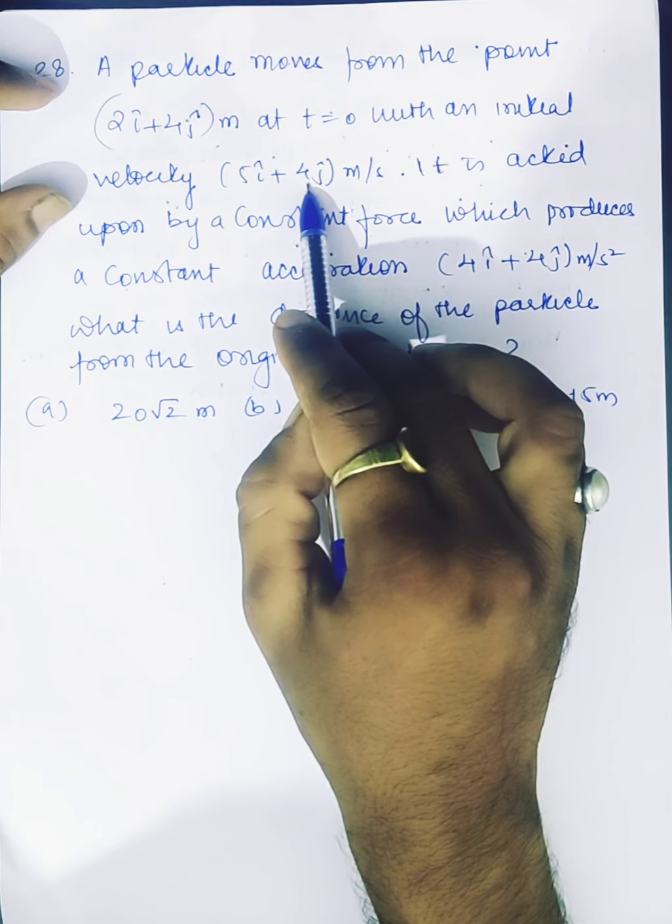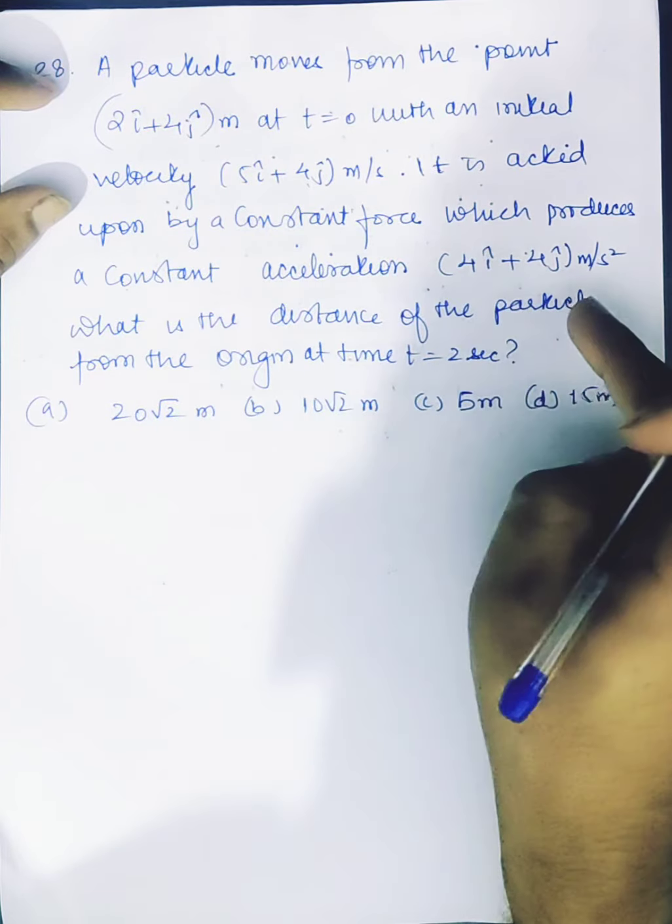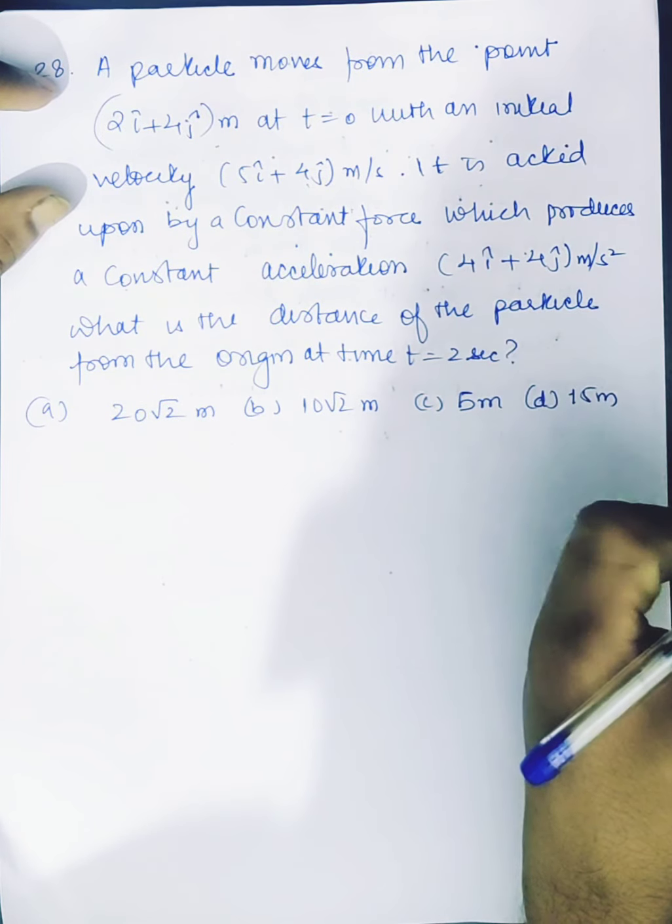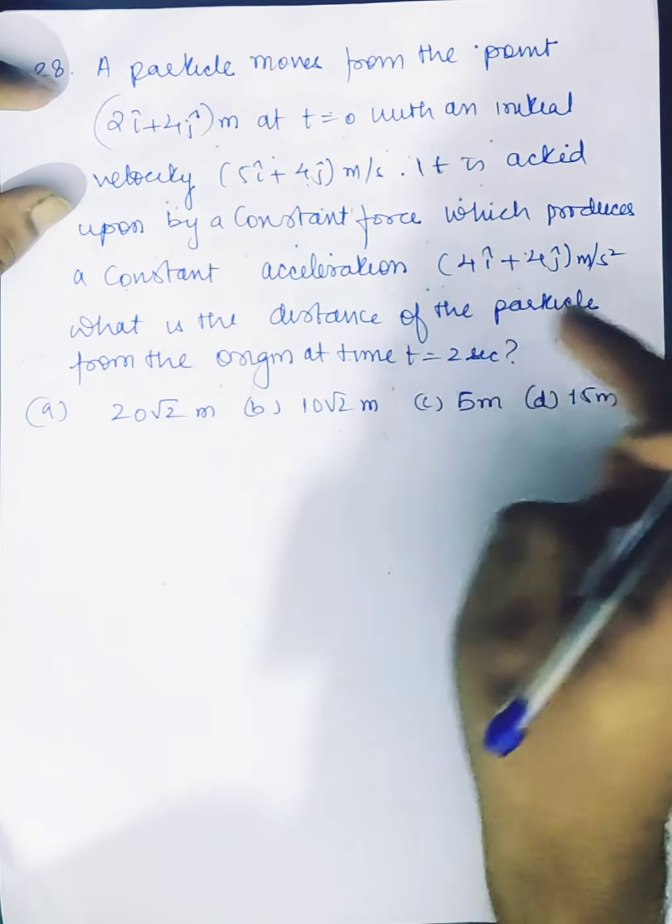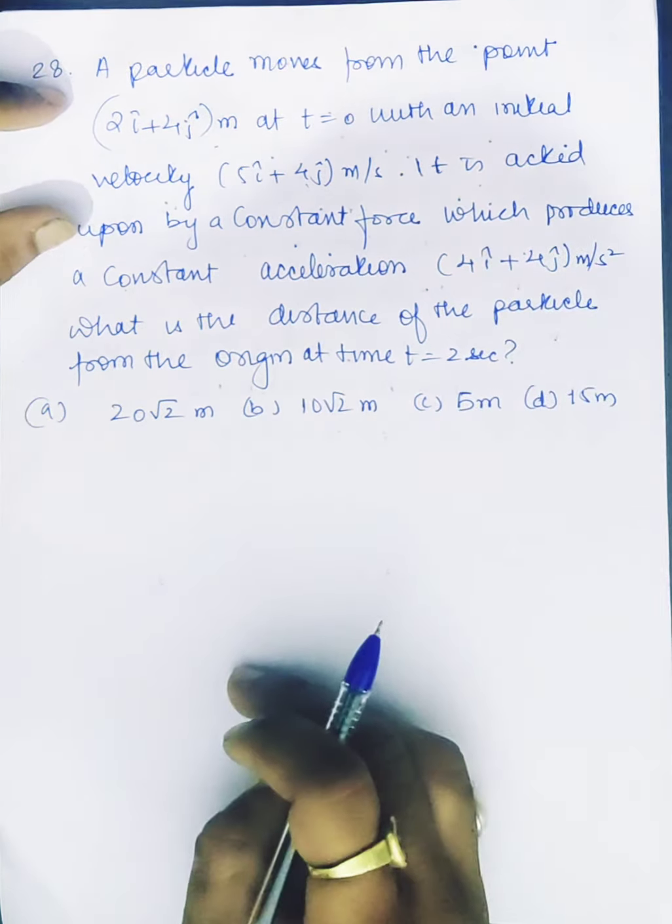It is acted upon by a constant force which produces a constant acceleration of 4i plus 4j meter per second square. What is the distance of the particle from the origin at time t equal to 2 seconds?